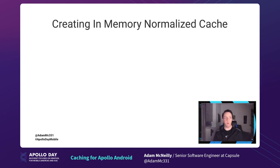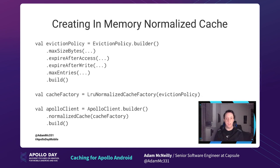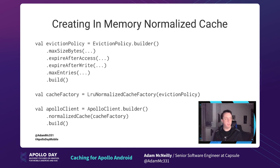To create the in-memory normalized cache, there are just two steps. We define our eviction policy — when things should be evicted — by calling evictionPolicy.builder(). We can set the max size in bytes, set expiry after accessing or after writing, or set max entries. We can mix and match these. Once we've determined the eviction policy, we create an LRU normalized cache factory and apply it onto our Apollo client using the normalized cache method on the builder.